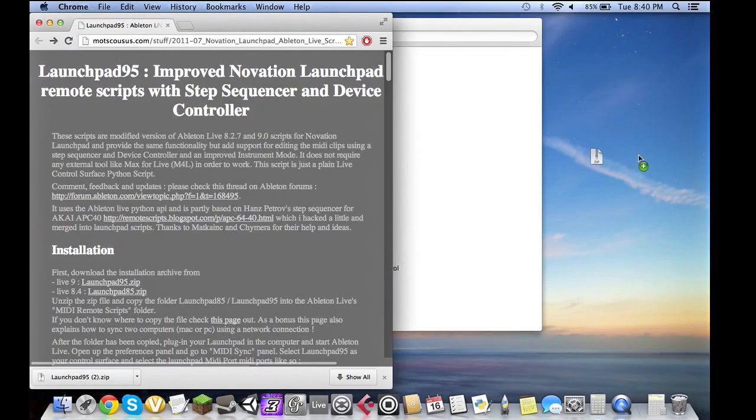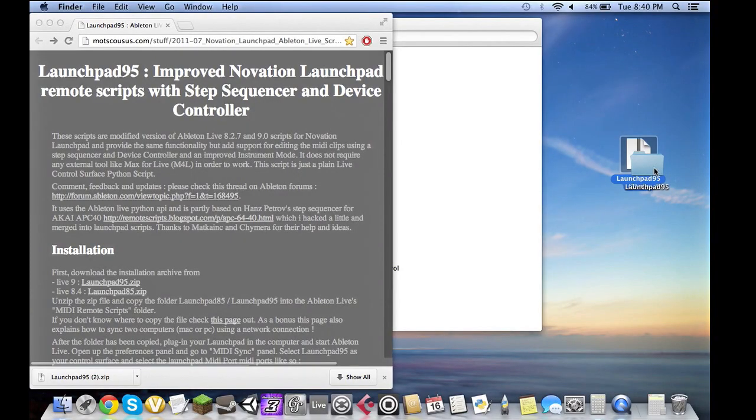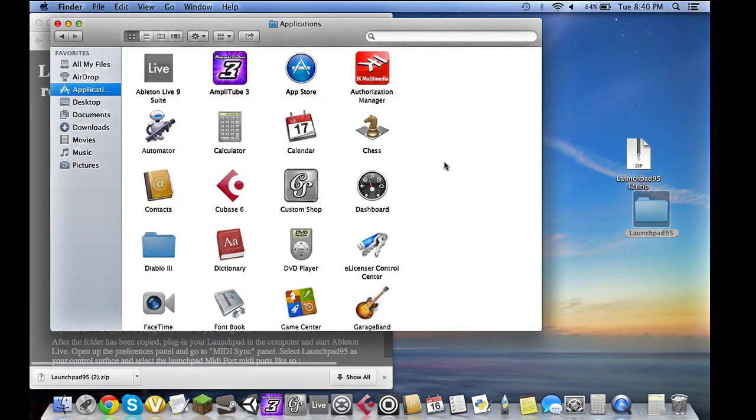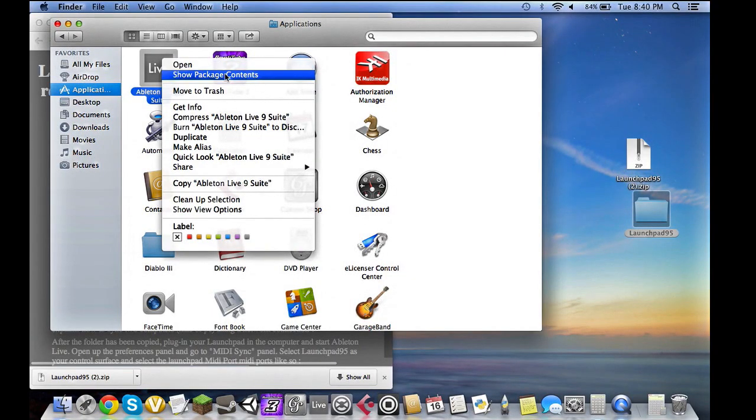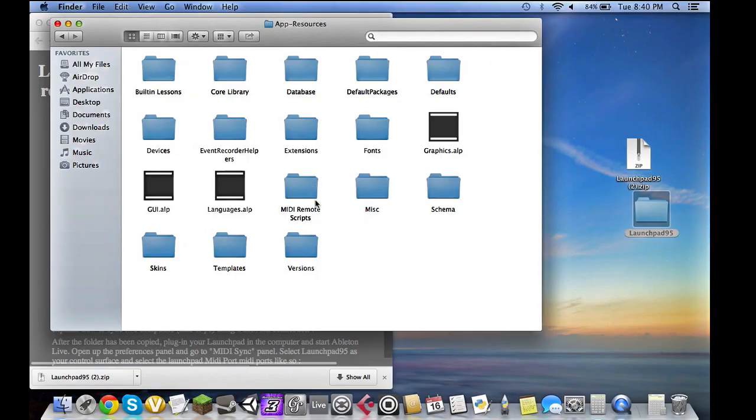After that, you're going to want to unzip it. That too should not take very long. And then you're going to want to drag the Launchpad 95 folder into Ableton's MIDI remote scripts. To do that on a Mac, you just need to find Live in your applications, hold down command, right click, show package contents. From there, navigate your way into app resources and then simply drag Launchpad 95 over to MIDI remote scripts.